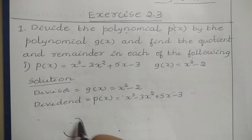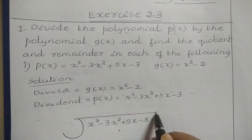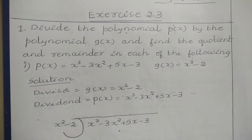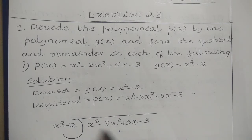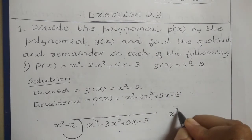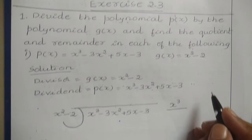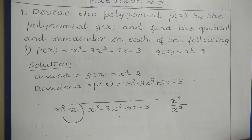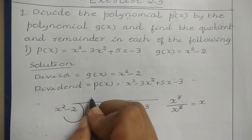We have to divide X cubed minus 3X squared plus 5X minus 3 by X squared minus 2. The first step is to divide the highest degree term of the dividend by the highest degree term of the divisor. The highest degree term of the dividend is X cubed, and the highest degree term of the divisor is X squared. So X cubed divided by X squared gives X — this is the first term of the quotient.